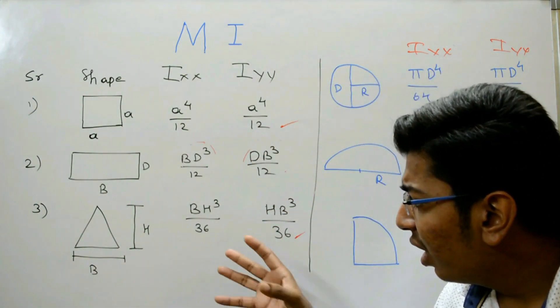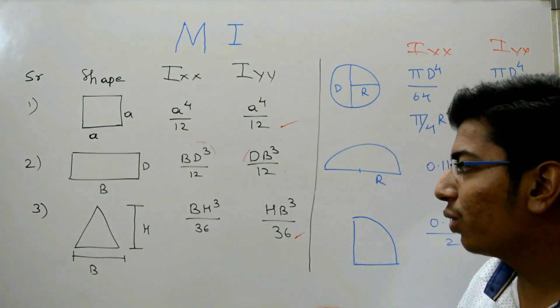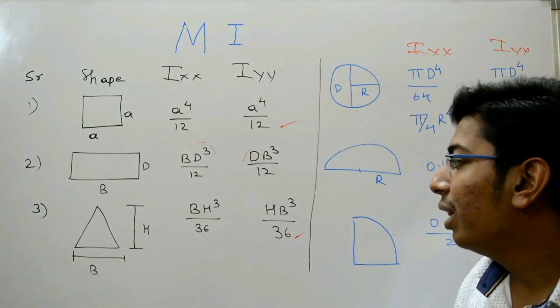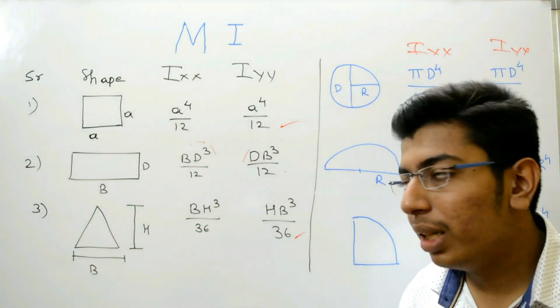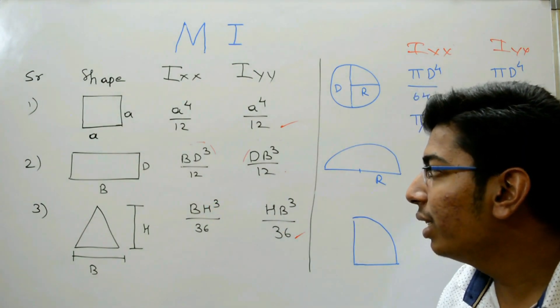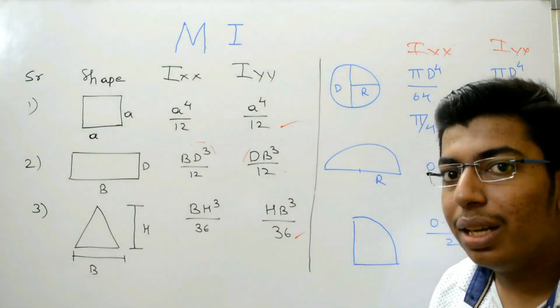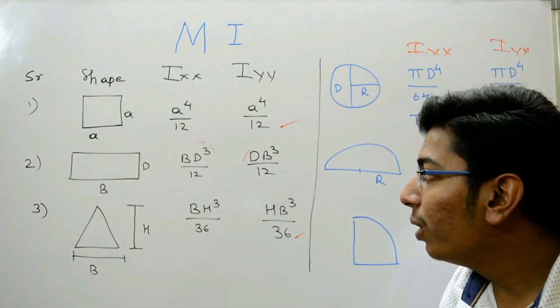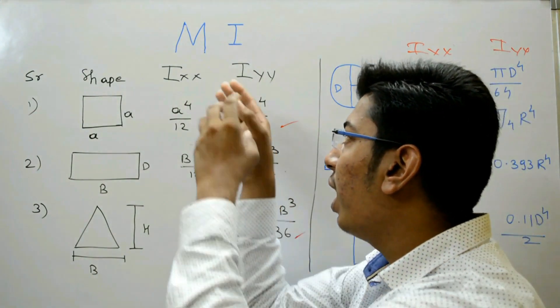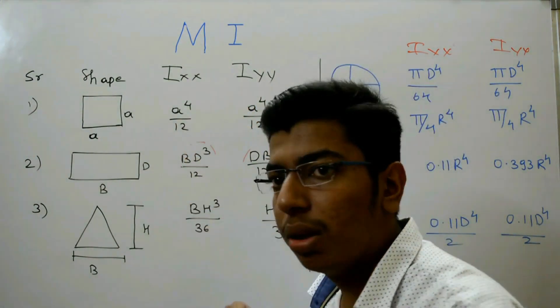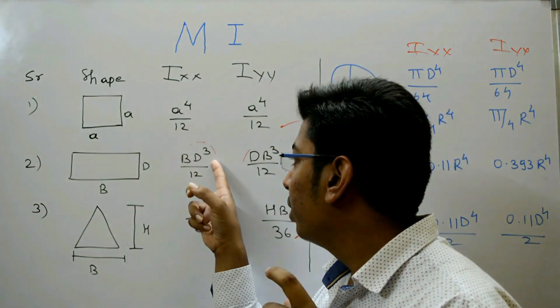Here also we have to observe the formula carefully because some people also make mistake over here. They are confusing B and D, where we have to give the cube. The thing we have to give the cube in Ixx to B. No.